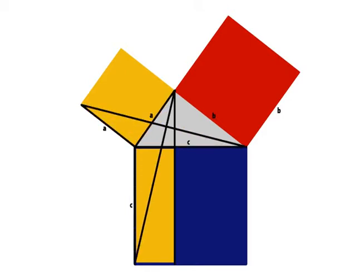These triangles are equal in area because they share sides A and C and have an equal angle in between them.